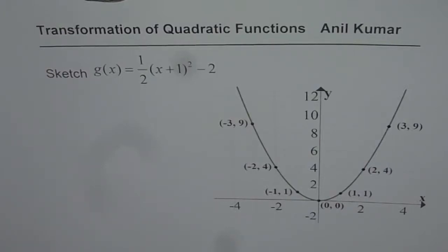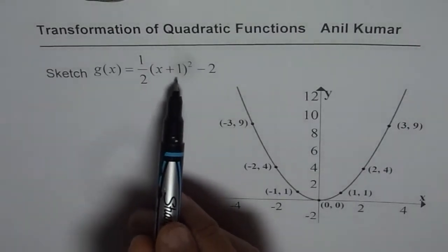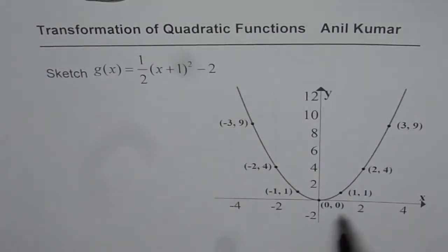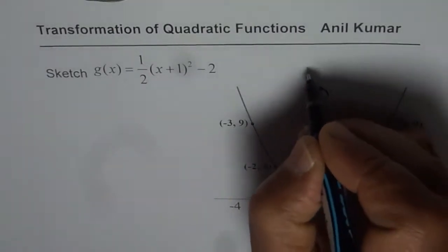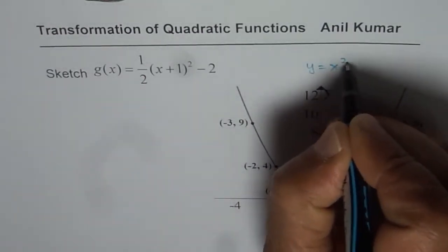I am Anil Kumar. We are doing transformation of quadratic functions. In this particular video, we will see how to perform transformations of quadratic functions using image points. We need to sketch g(x) = 1/2(x+1)² - 2. And what we are given here is the base function y = x².